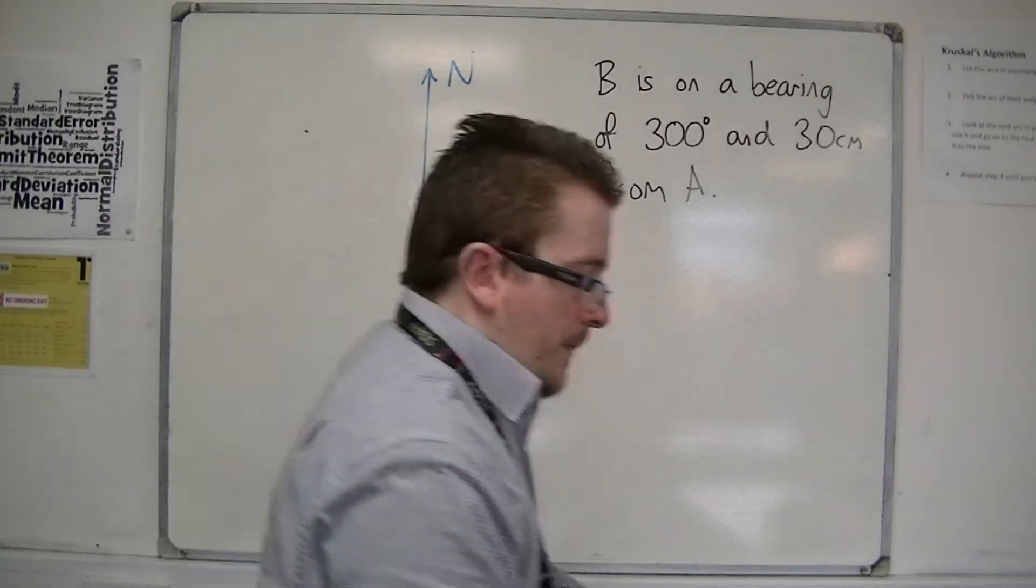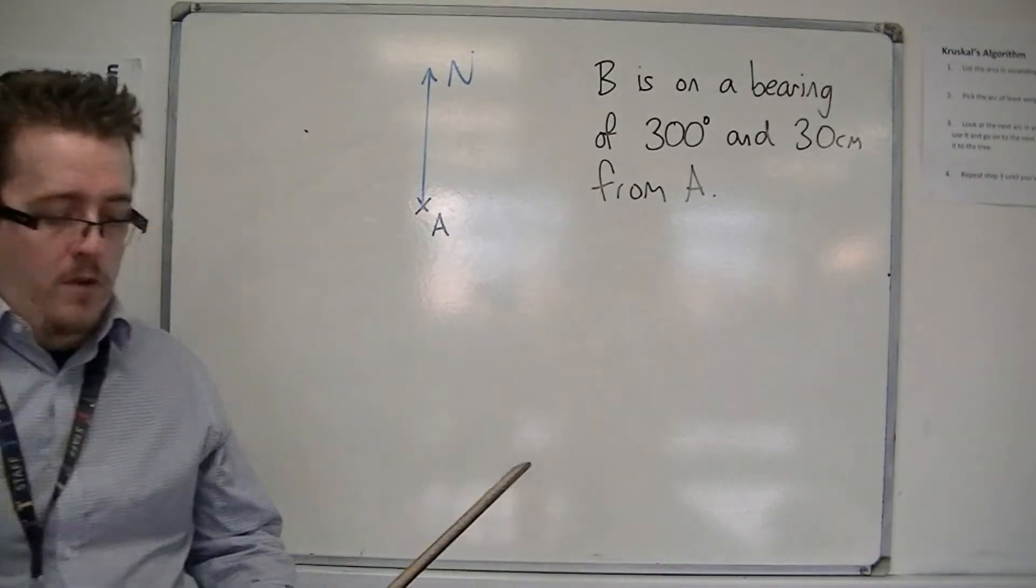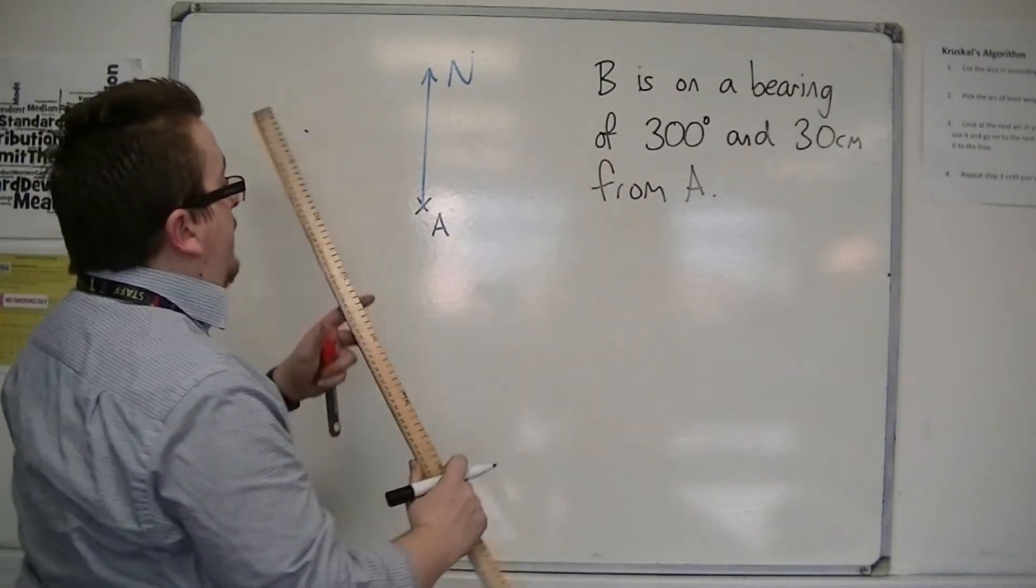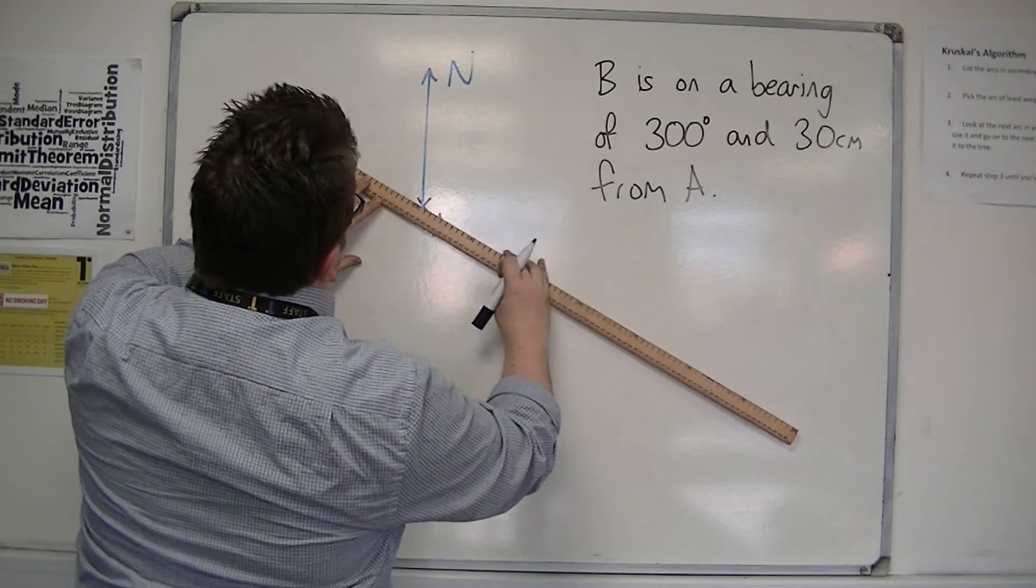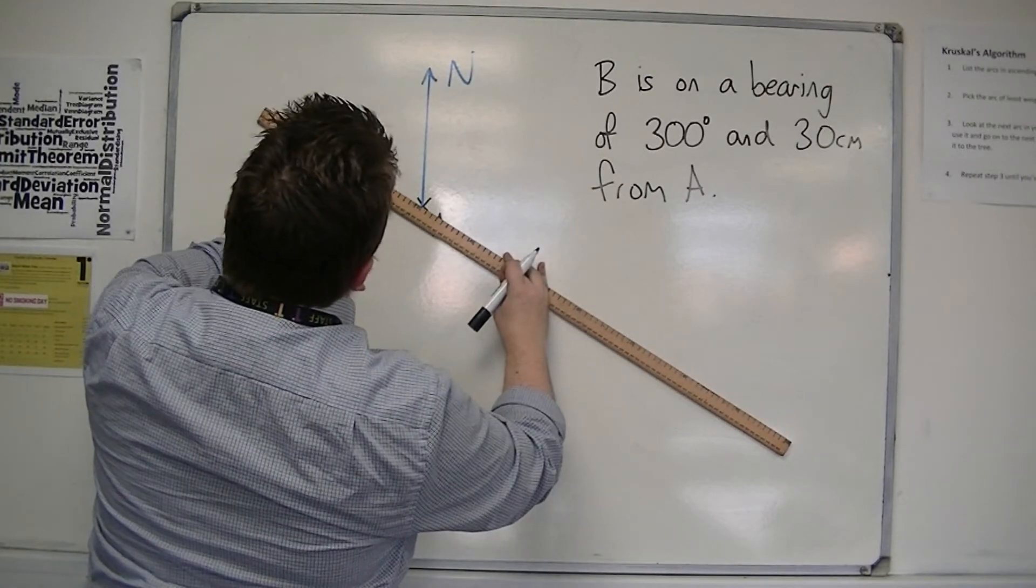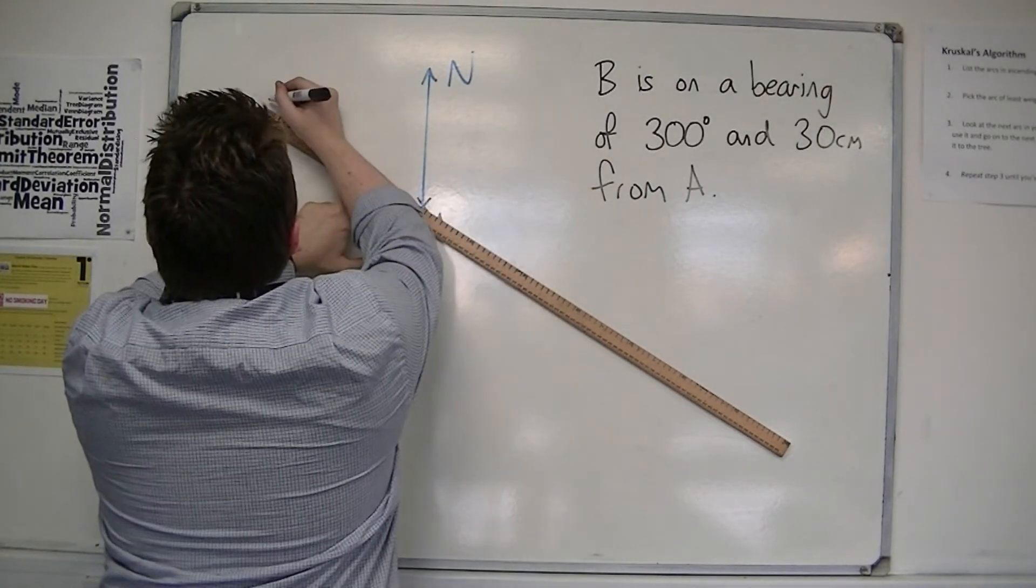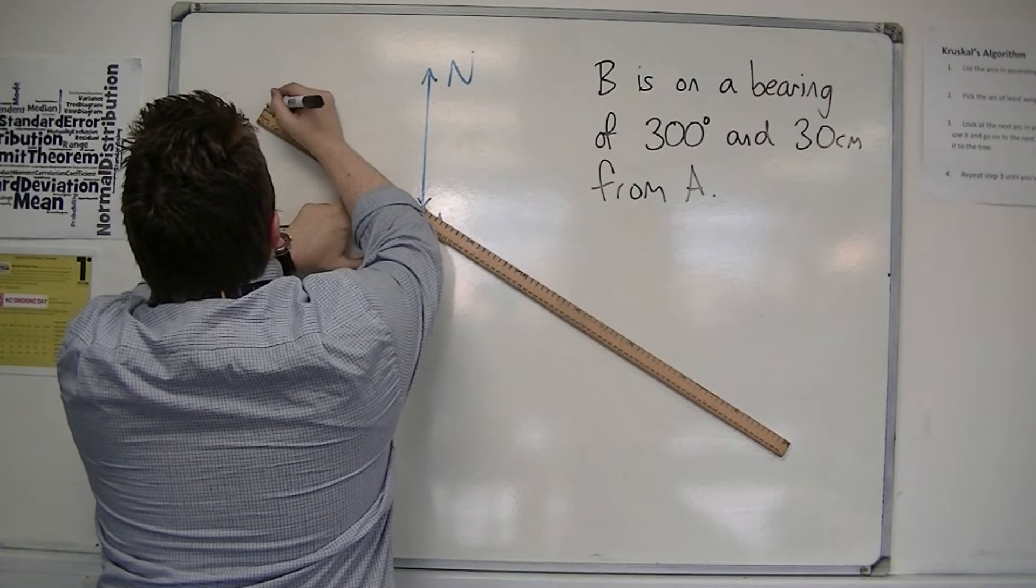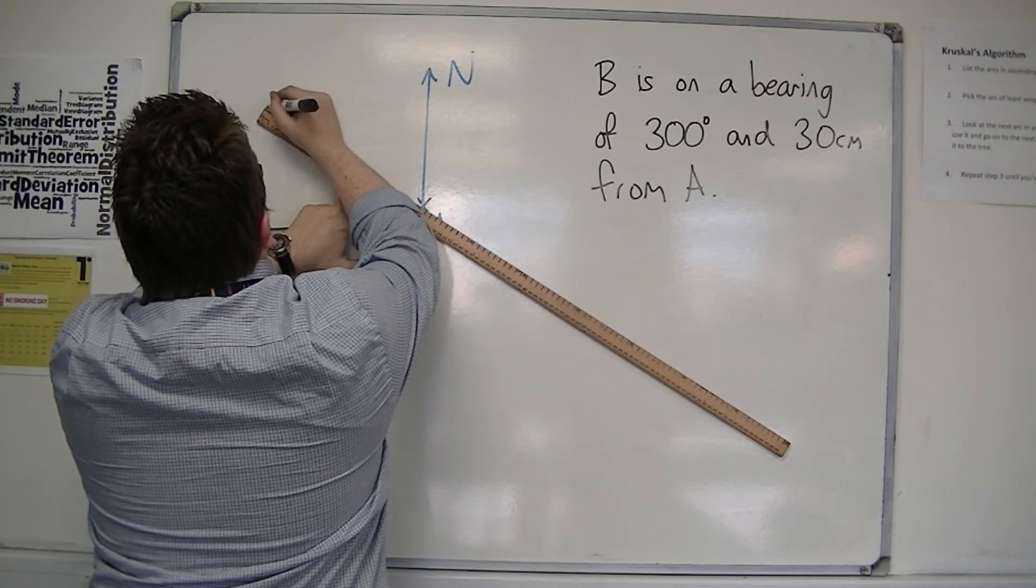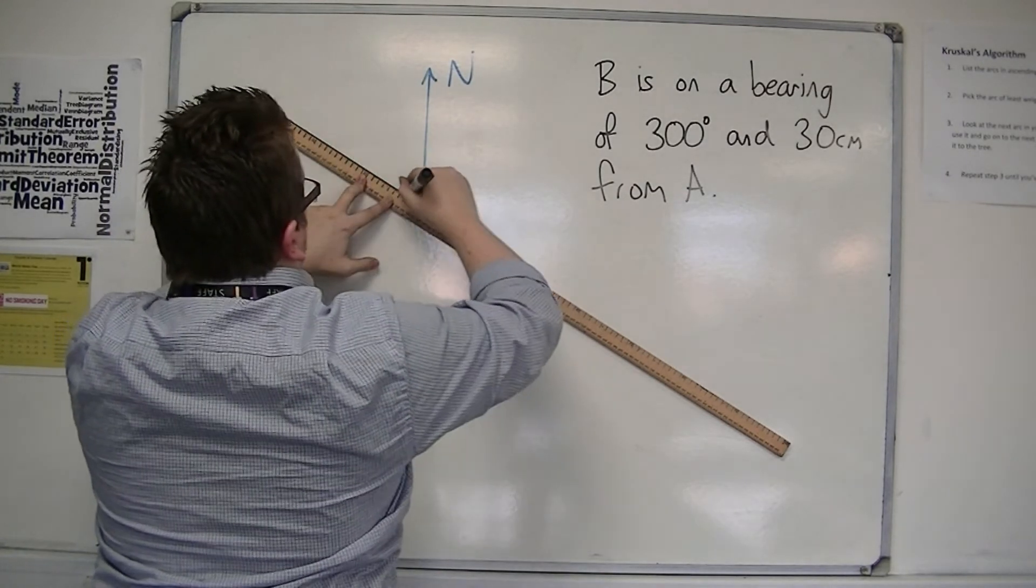And now I can measure with my ruler 30 centimetres, so that I have a point there. So I'll draw in the line.